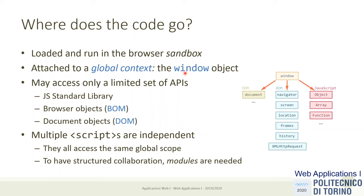The only objects our JavaScript code will see are the attributes and methods offered by the window and in particular the window global scope, which includes all the JavaScript standard library — everything we learned about JavaScript functions and objects. The window also offers two different sets of APIs: one for controlling and interacting with the browser — called the Browser Object Model (BOM) — and the most important one for interacting with the document itself — the Document Object Model (DOM). If you load many scripts in the same HTML, they behave as different programs but share the same global scope, meaning they may communicate by reading and writing variables on the window object.